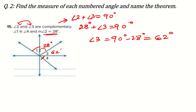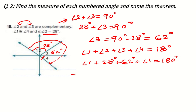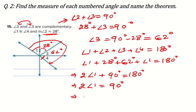Since angle 1 and angle 4 are equal, and all four angles form a straight line: angle 1 plus angle 2 plus angle 3 plus angle 4 equals 180 degrees. Substituting: 2 times angle 1 plus 28 plus 62 equals 180. So 2 times angle 1 plus 90 equals 180, giving 2 times angle 1 equals 90, so angle 1 equals 45 degrees. Angle 4 is also 45 degrees.